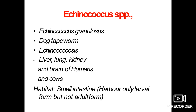This parasite mainly affects the liver, lung, kidney, and brain of humans and cattle. It was first documented in Alaska but is distributed worldwide. Communities that practice sheep farming are at high risk, though wild animals can also serve as an avenue for transmission.